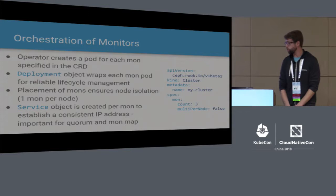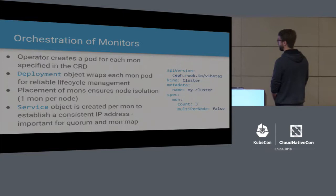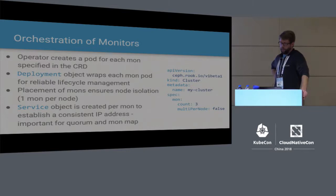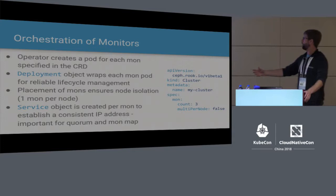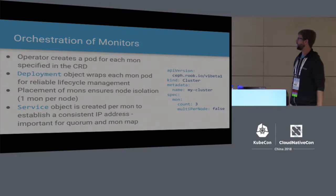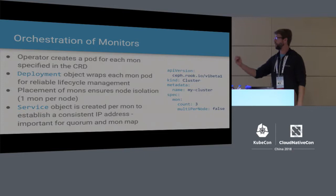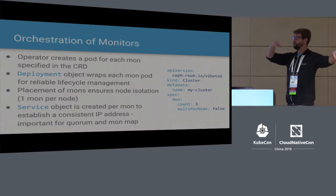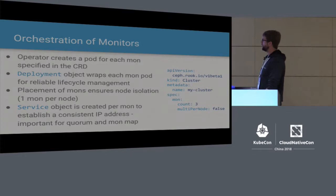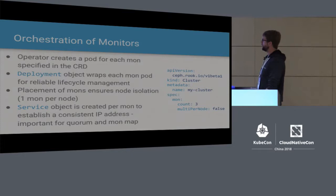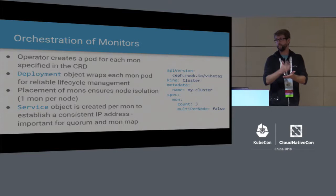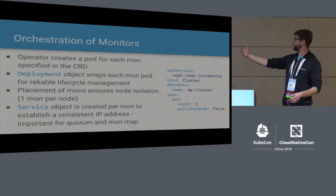Monitors are the first component deployed in a Ceph cluster and are incredibly important — they're aware of where everything in the cluster lives and communicate with all other components. The Ceph cluster resource lets you specify how monitors should be deployed. The operator creates a pod for each monitor, wraps it with a deployment object, and uses anti-pod affinity and node affinity to make sure each monitor ends up on a different node. It also creates a Kubernetes service object so each monitor has a consistent IP address — so if the pod goes down and comes back up, it still has the same unique address that other components know how to find.